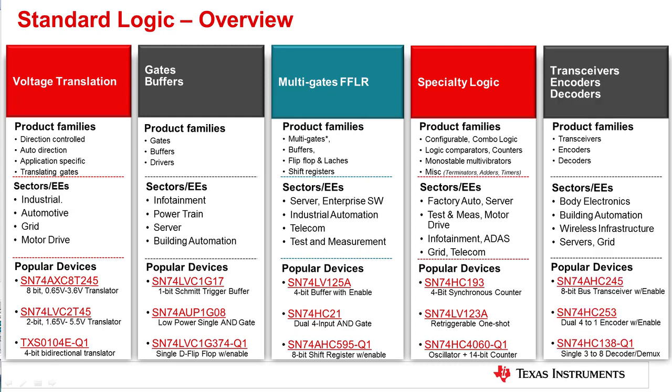Number five is the transceivers, encoders, decoders. This includes standard transceivers, registered transceivers, buffered encoders, and decoders. Popular devices include AHC245, HC253, HC138.